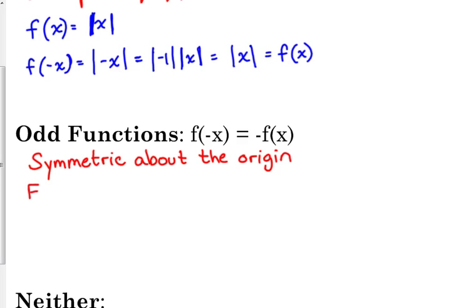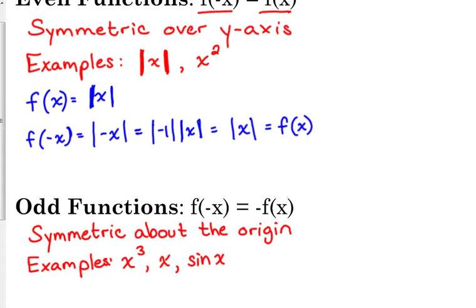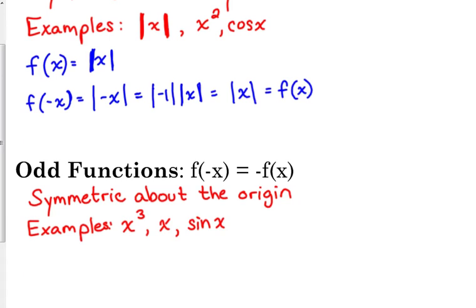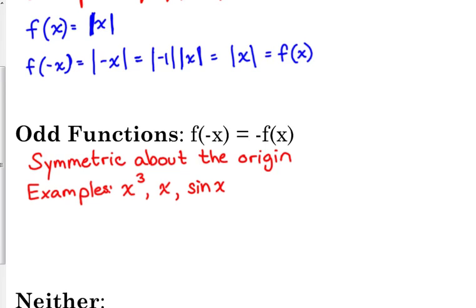So, for example, x cubed is one of the most common odd graphs. x is also a common odd graph. And then we haven't talked about our trig functions yet, but sine of x is an odd function. And since I'm talking about that, I might as well tell you that cosine of x is an even function. So cosine of x is symmetric about the y-axis. Sine of x is symmetric about the origin. So when you rotate it, it looks exactly the same as the original.